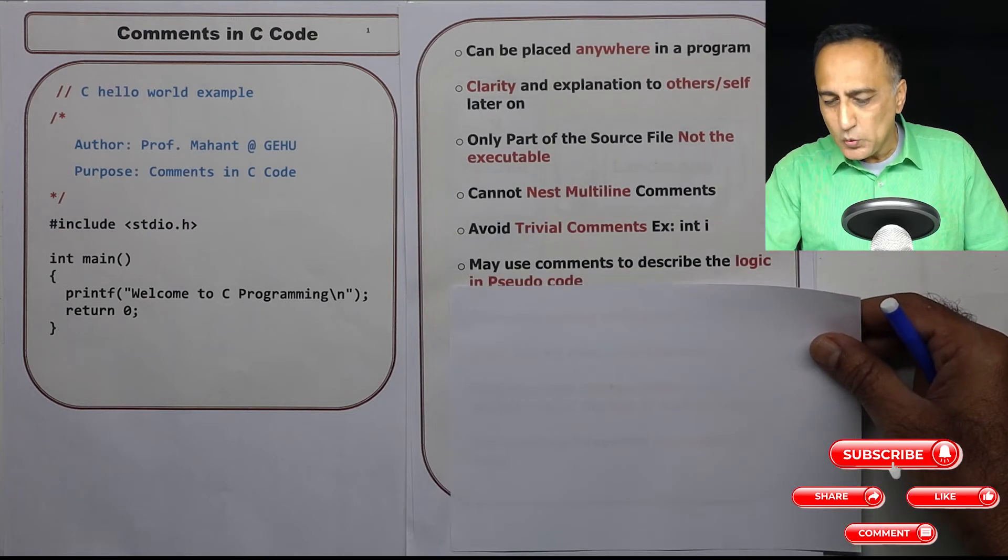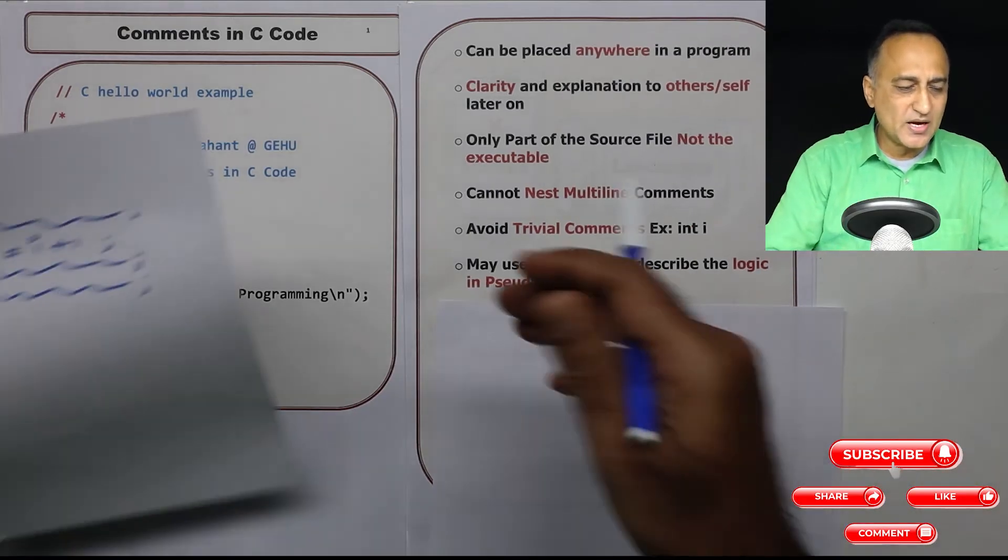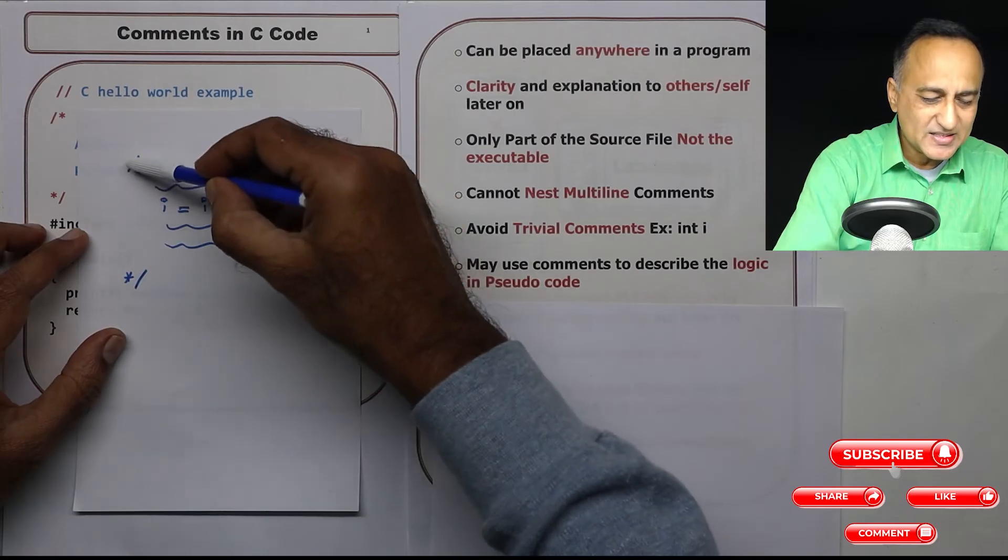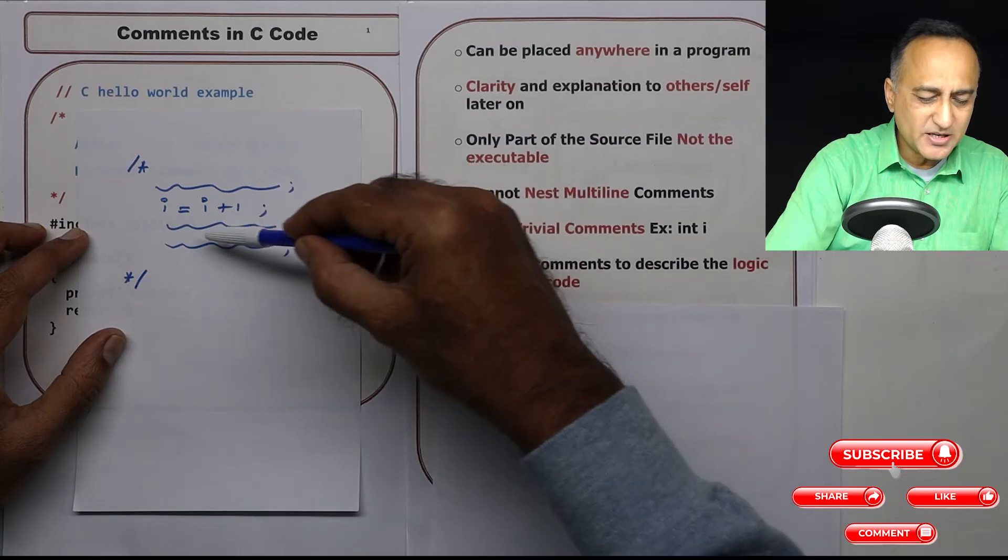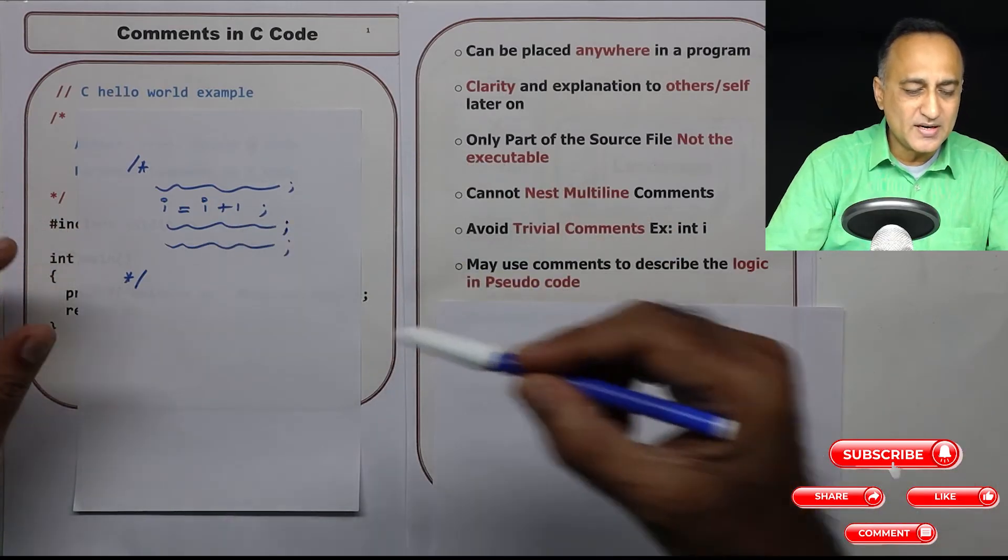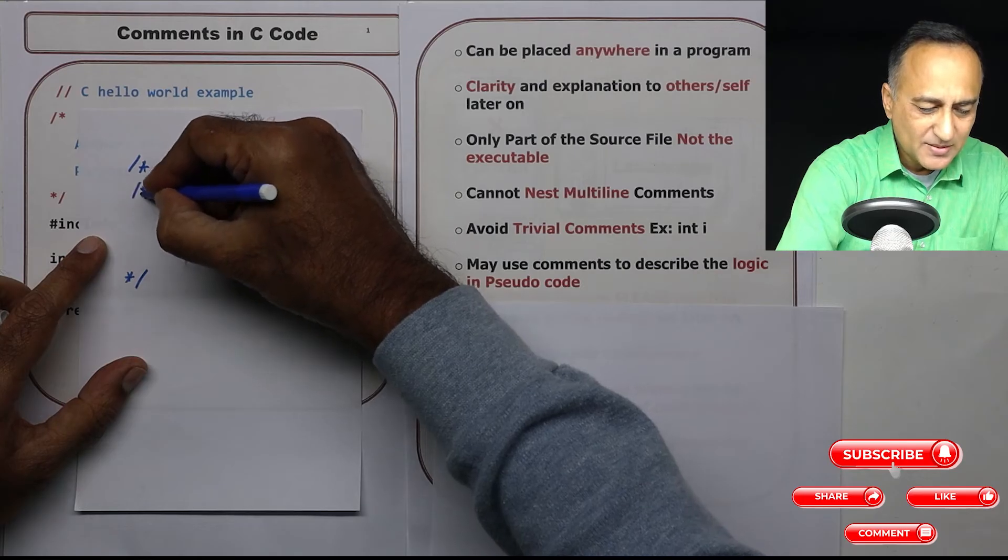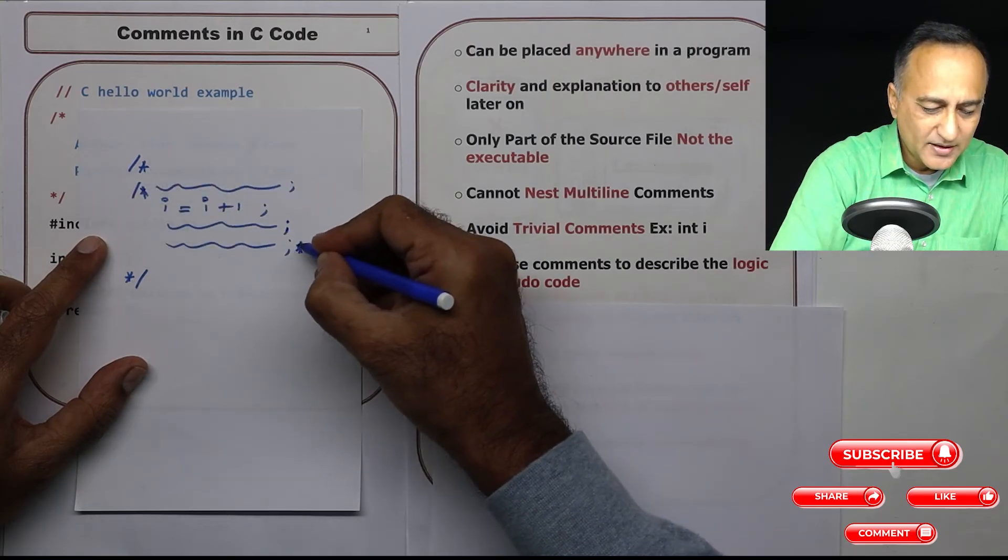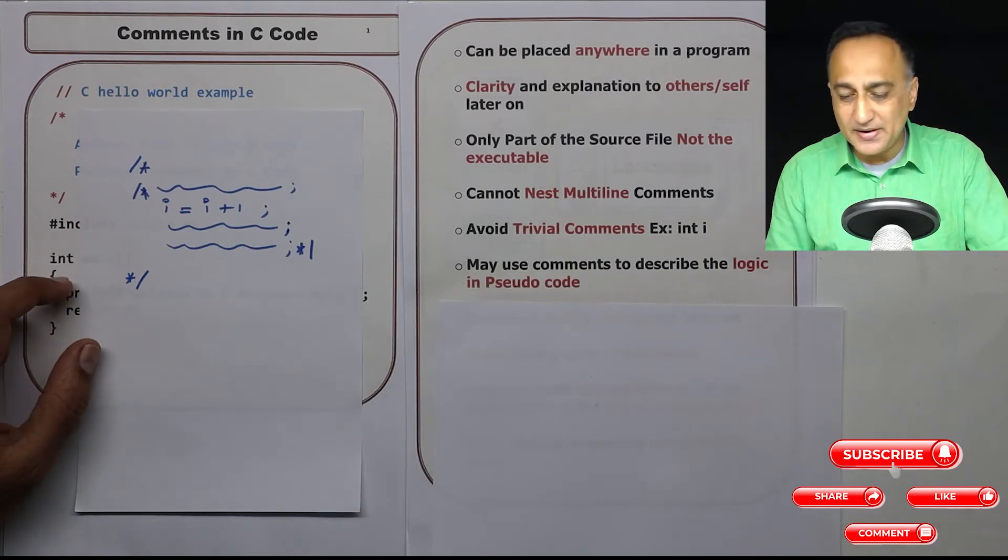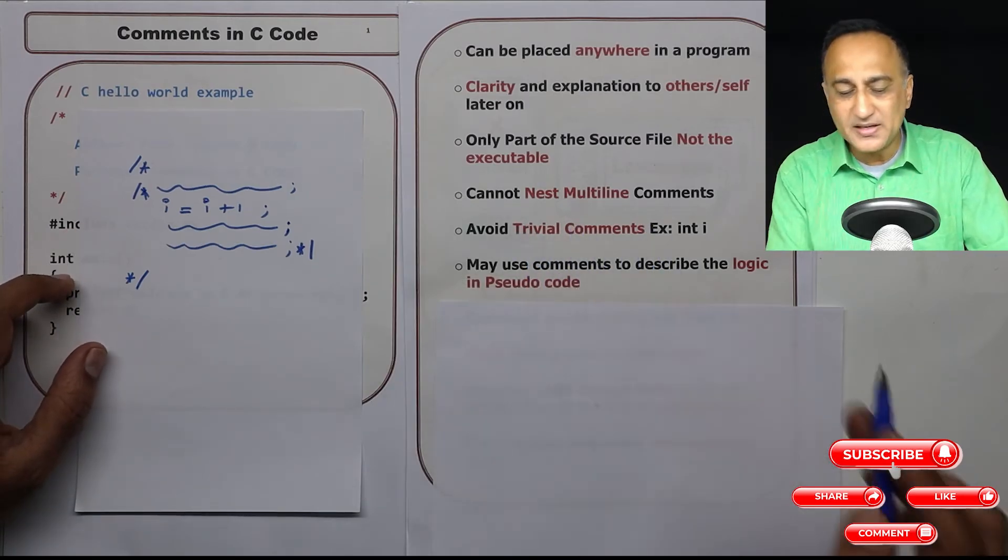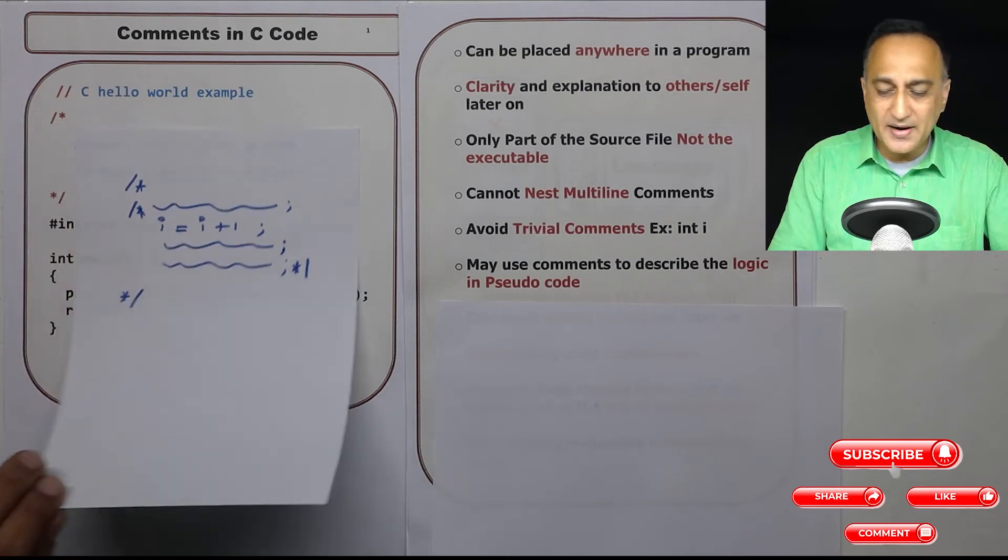Now we cannot nest comments. What do we mean by this? Suppose I have got a comment like this, this is a multi-line comment, I have some statement, and these are examples of four statements. Now within this I cannot write another comment. So you cannot have a comment within a comment, that means you cannot nest multi-line comments. Nesting means a comment within a comment is not permitted by C.